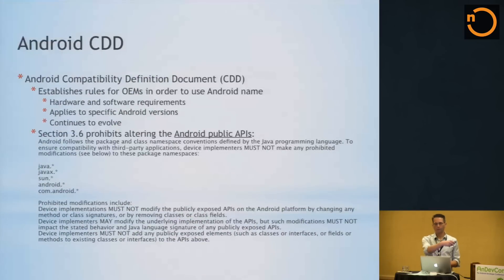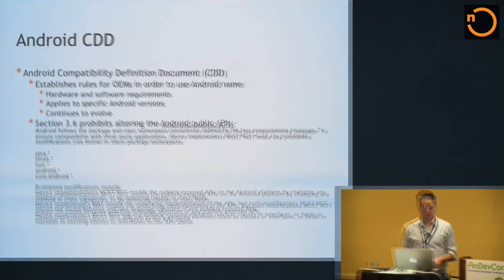What we're talking about is a little different. Section 3.6 of the CDD prohibits altering the public APIs - the Java, JavaX, Sun, Android, and com.android namespaces all have to remain intact. As a platform vendor, you're not allowed to touch those APIs, change their signature, add new methods, add new classes, or remove any classes or methods. However, there's a caveat: you can't alter the signature of methods and classes, but you can change the implementation - just make sure you're doing it in a way that still maintains compatibility with the contract of that class or method.